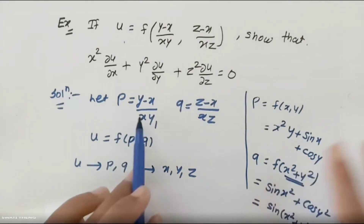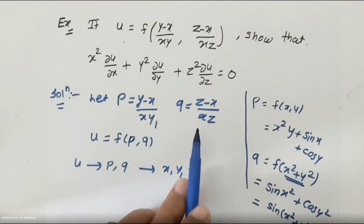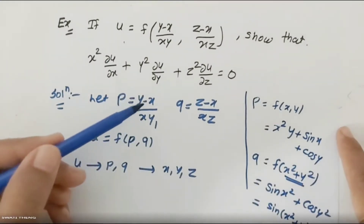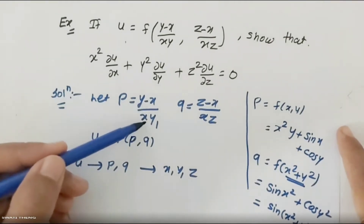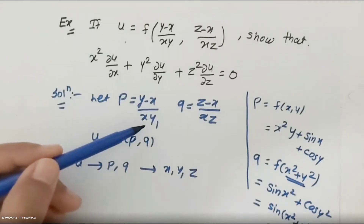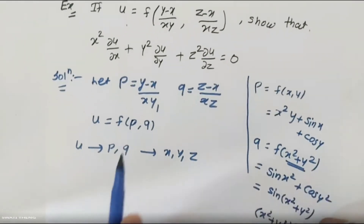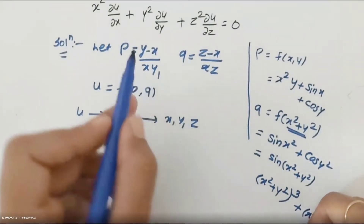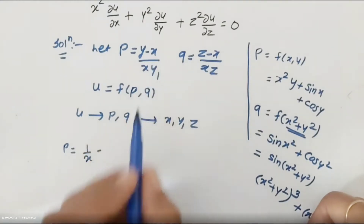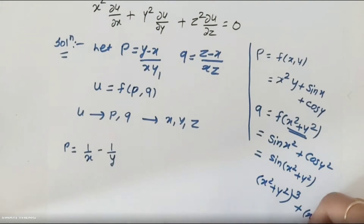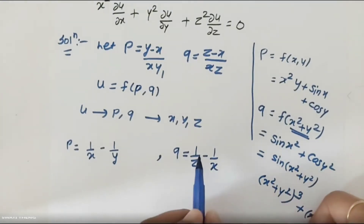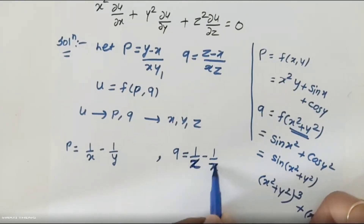So we need to differentiate p and q. However, since the numerator and denominator both contain x, we'd need the quotient rule. To avoid the division rule, we separate the terms. So p = (y − x)/xy = y/xy − x/xy = 1/x − 1/y. Similarly, q = (z − x)/xz = 1/x − 1/z.